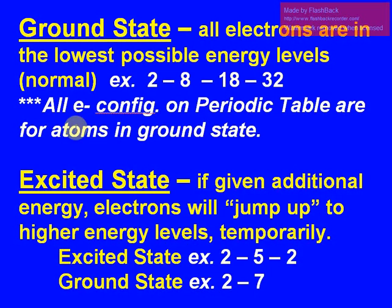An important note is that all electron configurations on the periodic table are for atoms in the ground state. So if it's on the periodic table, it's a ground state electron configuration like 2-8.